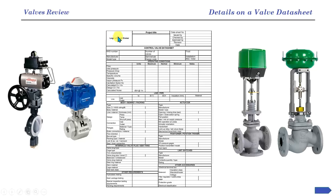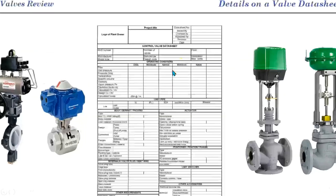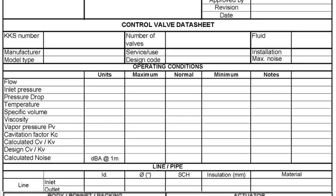Starting from the top section, we can see project specifications as well as the names for people who generated and reviewed this document. Then just below that we have a few fields to describe the equipment identification number and location. KKS can convey a lot of information about the equipment. There is a simpler identification number which is called tag number. Line service, manufacturer, and model are other important data in this section.